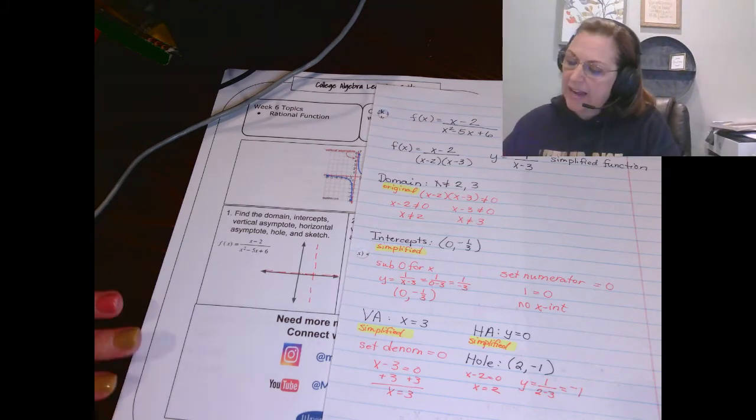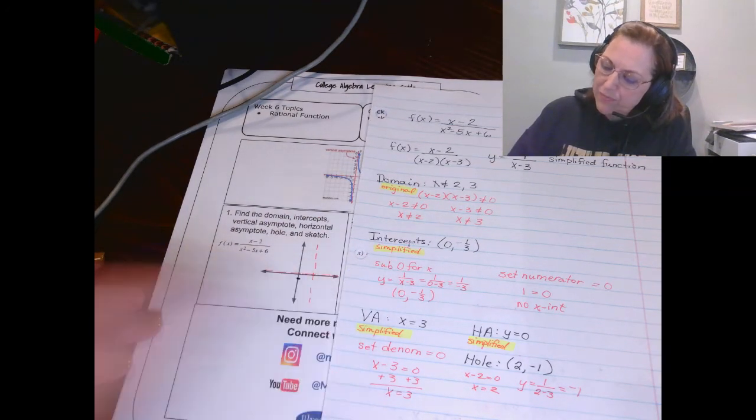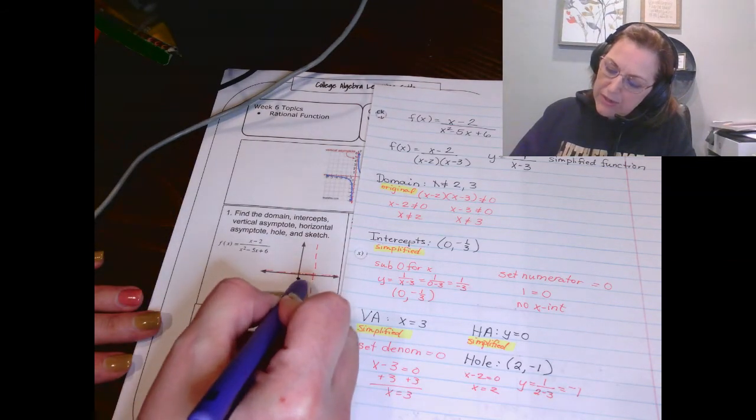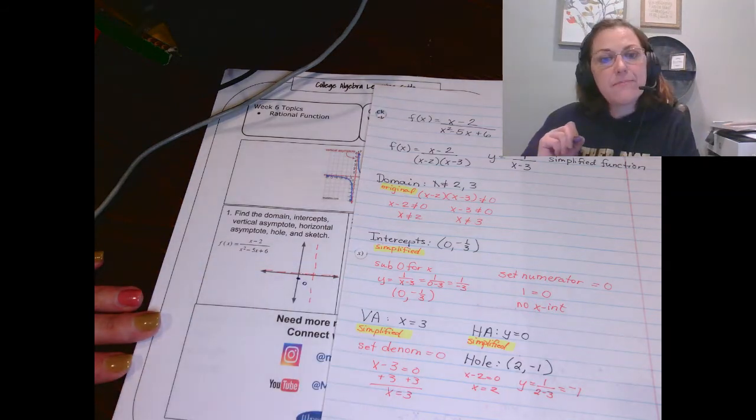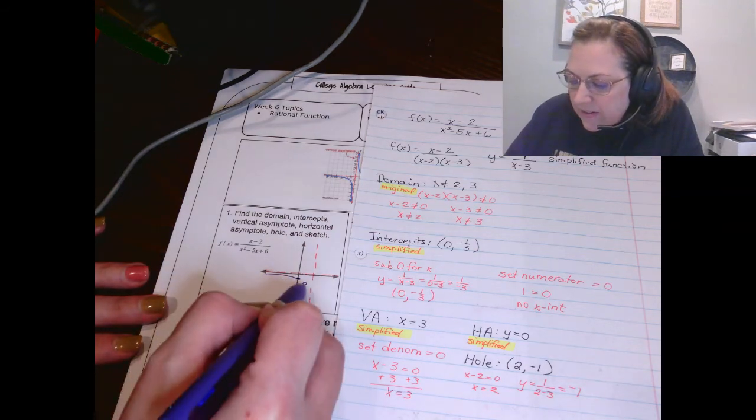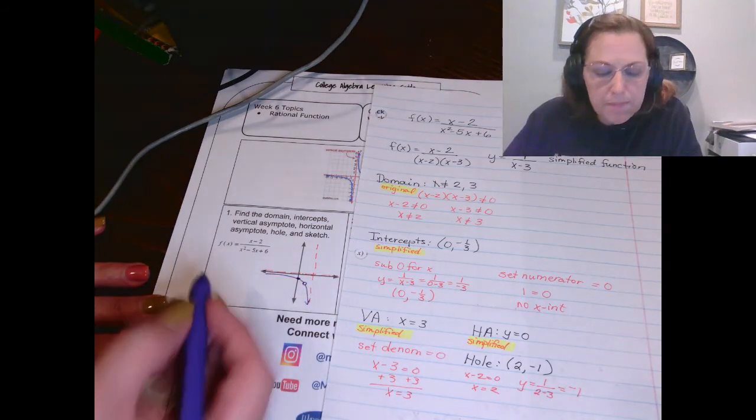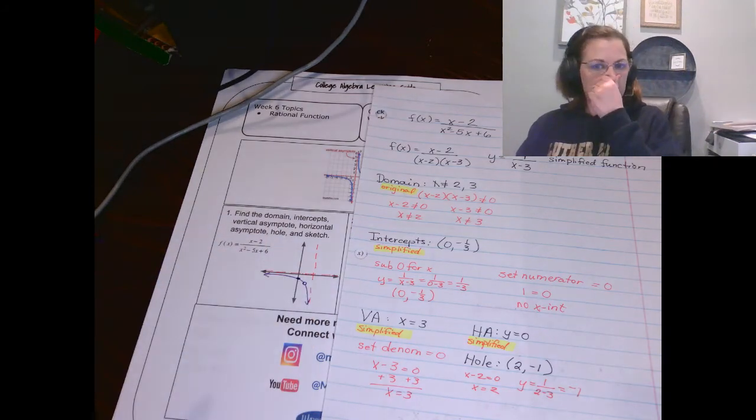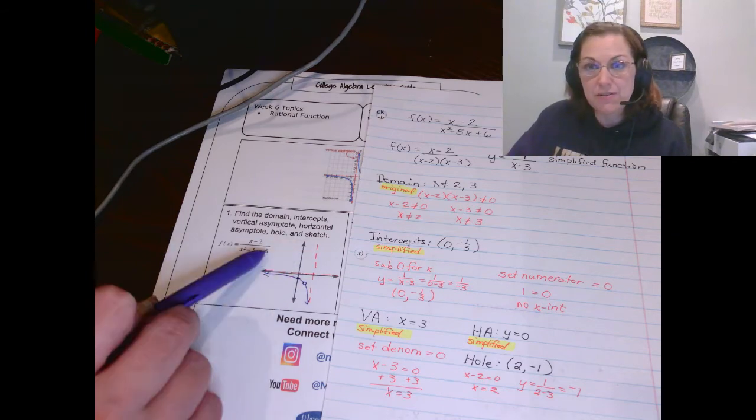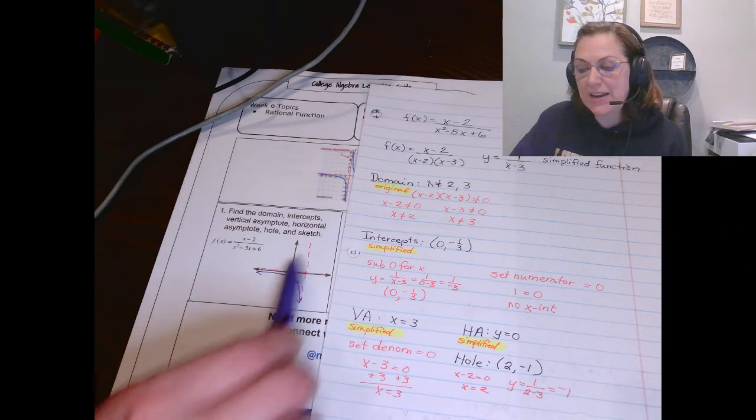After I graph my asymptotes, the next thing I graph are the intercepts that I have. So I had an intercept at 0 negative 1 third. That's down here. After I graph my intercepts, I graph my hole at 2 negative 1. I draw a hole just like that. And then I know that this graph has to do something like this. See, because I know that graphs get close to their asymptotes but they don't touch them. And now I know it cannot be in this section because then it wouldn't pass the vertical line test and it wouldn't be a function. So I know it cannot be up here.